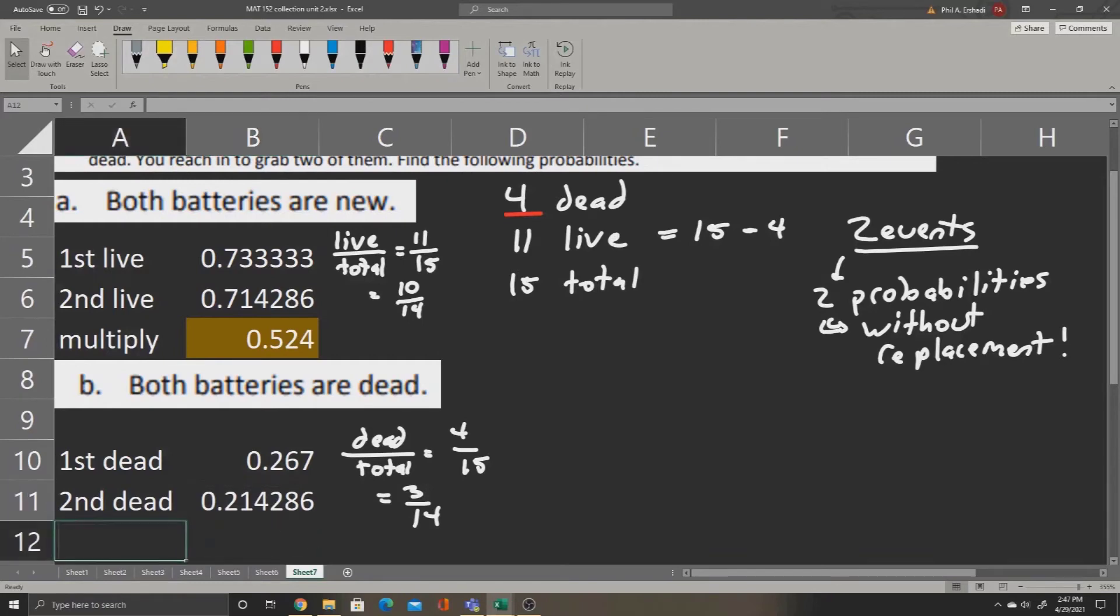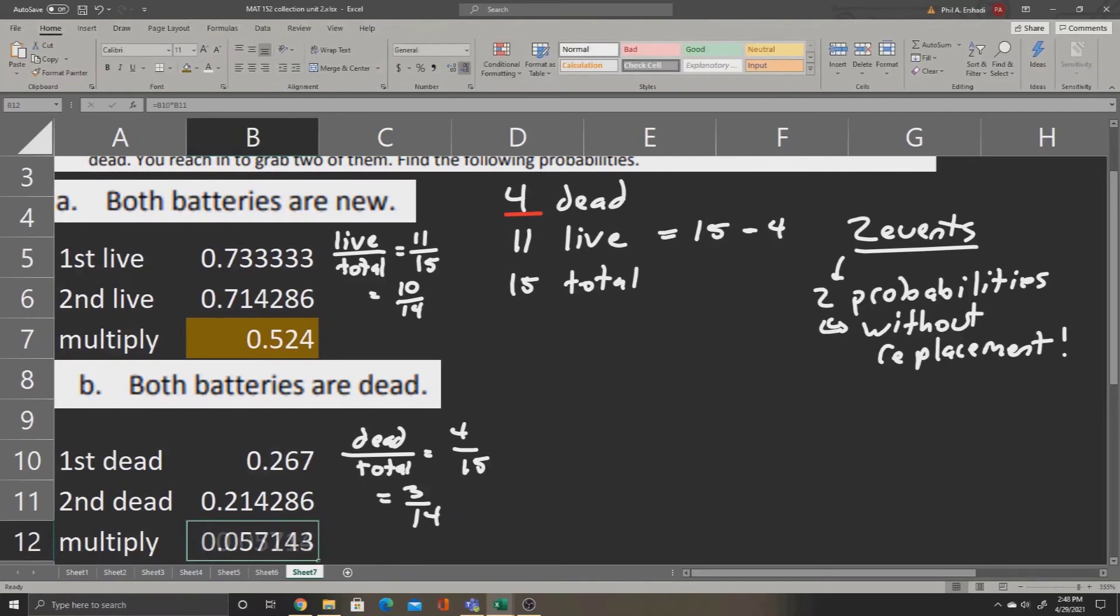Now we multiply. We'll just take the first times the second. Click the first probability, multiply by the second. This gives us a probability of 0.057143. Again, let's reduce the decimals. So this is about a 5.7% probability that both batteries will be dead.